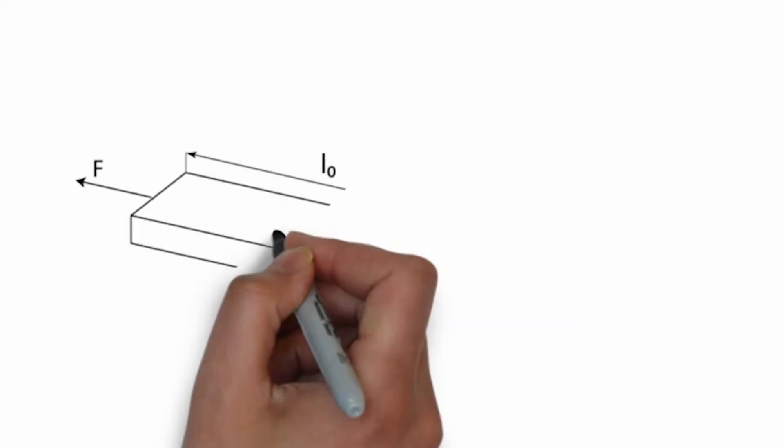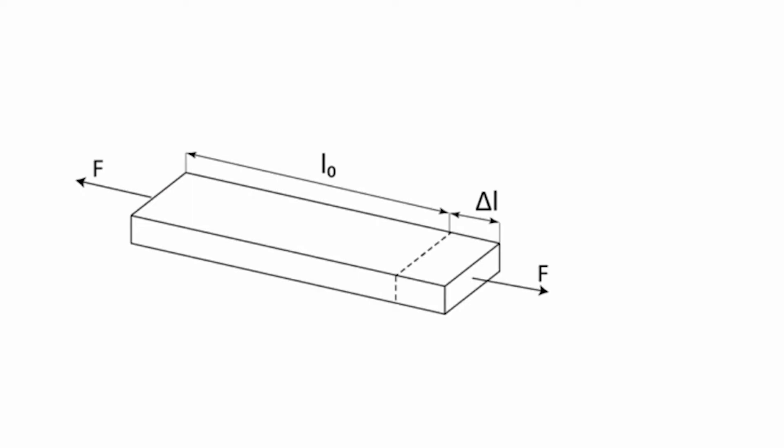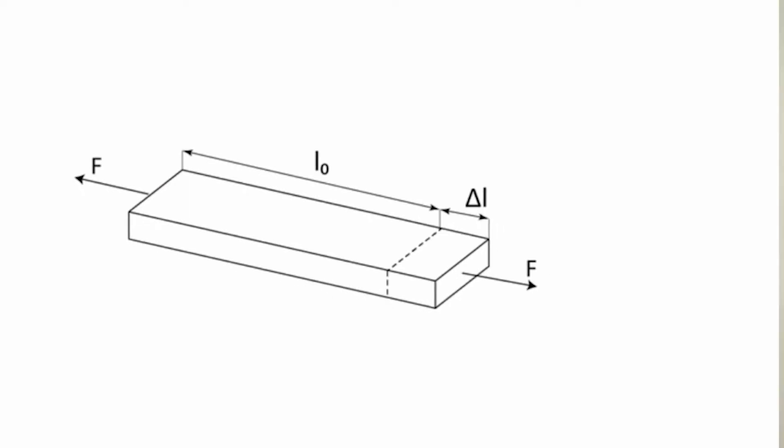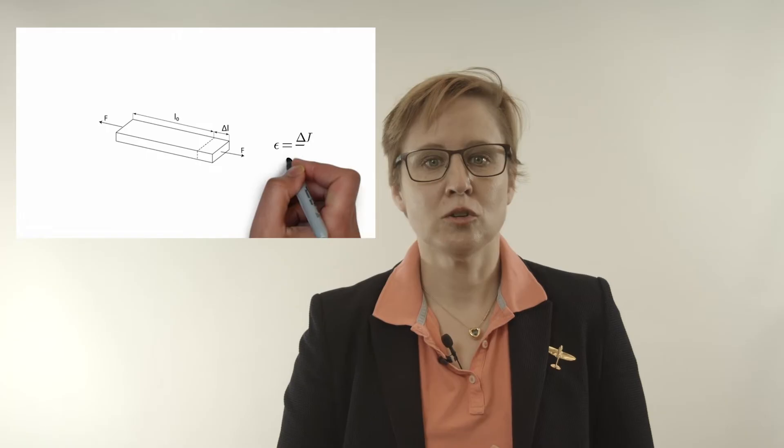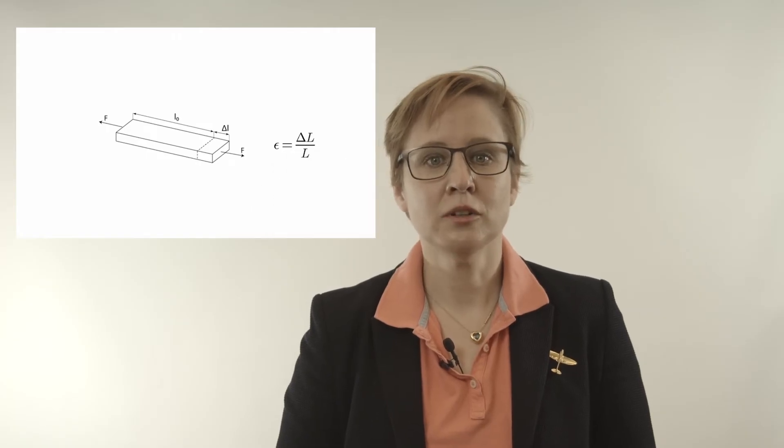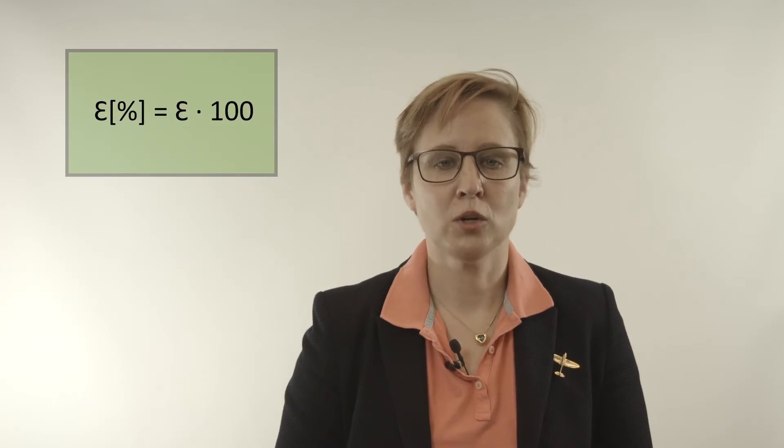Let us take a look at a rectangular beam of length L that is pulled apart by a force F. As a result of the application of this force to the beam, the beam will become longer by a distance delta L, the triangle depicting the Greek capital letter delta. We can now define strain, denoted by the lower Greek letter epsilon, as the elongation delta L divided by the initial length of the beam L. Strain is often expressed as a percentage by multiplying the outcome of this formula by 100.